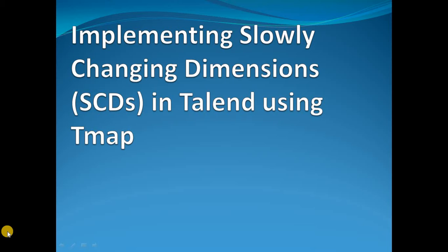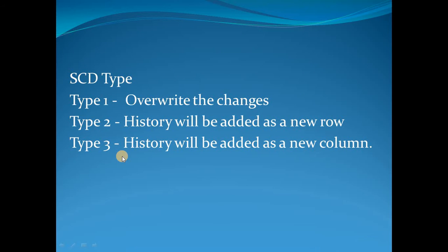In general we have three types of SCDs. In SCD Type 1 it just overrides all the changes — only the current transactional data will be present in the data warehouse, so that is a normal truncate and load. In SCD Type 2 all the historical data will be maintained — every time you make an update to the transaction database, that history is preserved in your data warehouse. In SCD Type 3 only the previous changes are tracked, and instead of a new row a new column will be added.